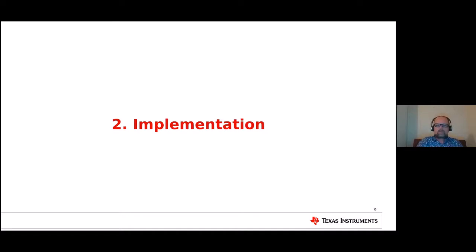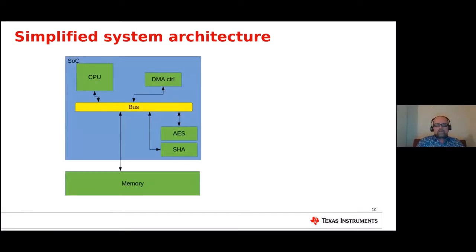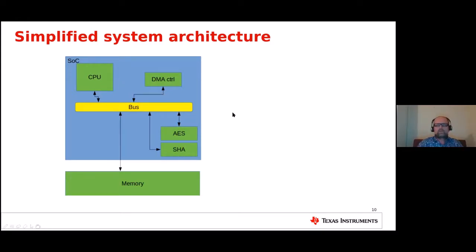Moving to the implementation side, here's a simplified system architecture diagram. We have an SOC with a bus, a CPU, and a couple of crypto accelerator blocks. The goal is to utilize these accelerator blocks to make crypto operations faster. These crypto accelerators quite often use some sort of DMA to transfer data between the accelerator block and memory, while the CPU just controls the setup of the system.